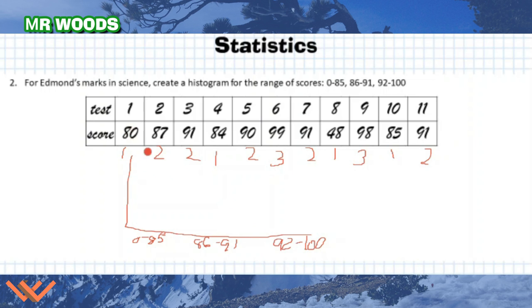And then the 92 to 100. That's going to be three and three. Let's make sure I got all of them there. Yes, I did. So for zero to 85, I have one, two, three, four. And let's just do one, two, three, four. What I can do is draw this here. That's going to be my value for zero to 85.